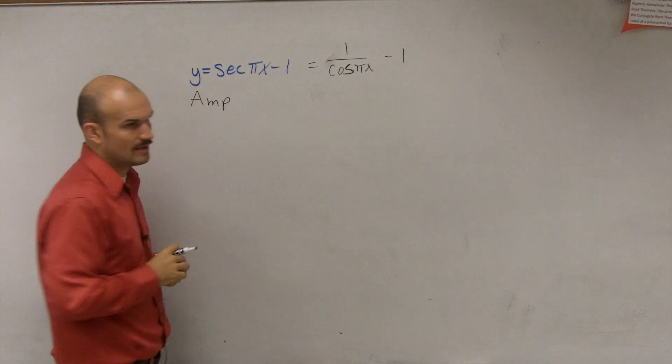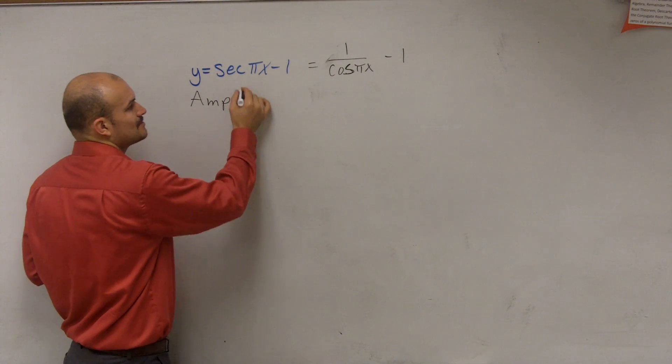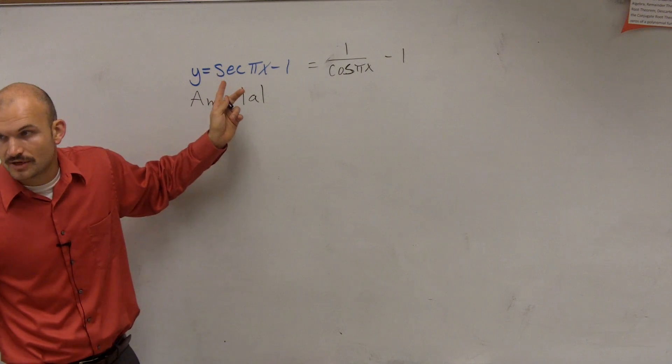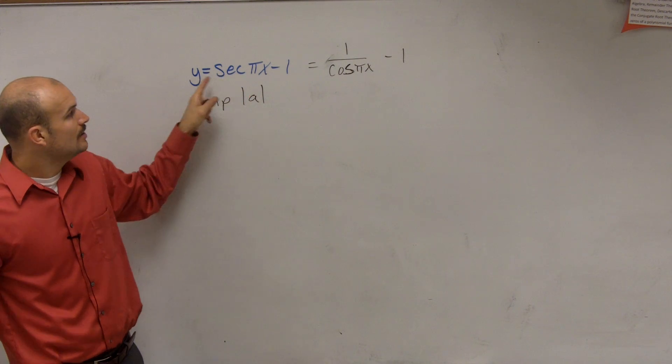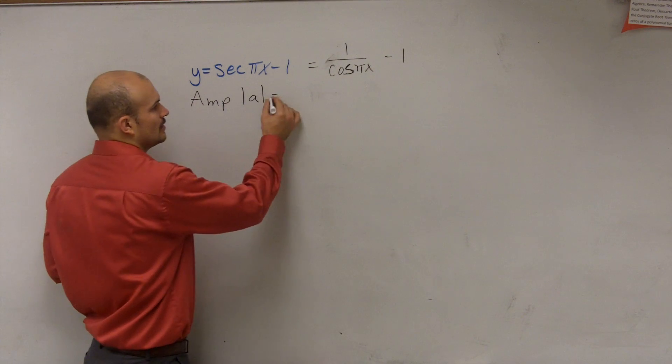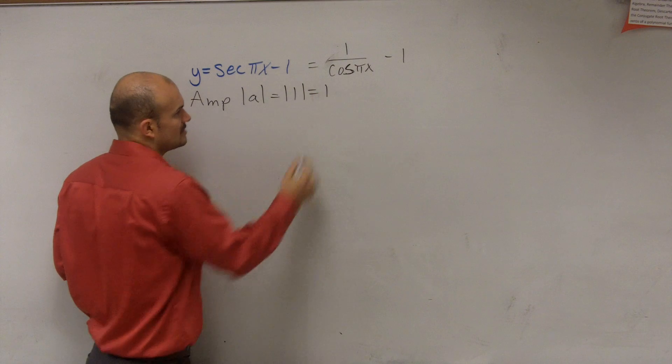The first thing we do is determine our amplitude. Remember, the amplitude is going to be the absolute value of A, where A is your coefficient of your function. We're going to look at the cosine of pi x, which in this case is 1. So therefore, absolute value of 1 is equal to 1.